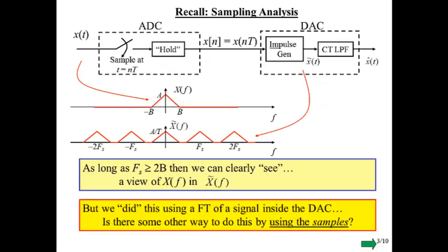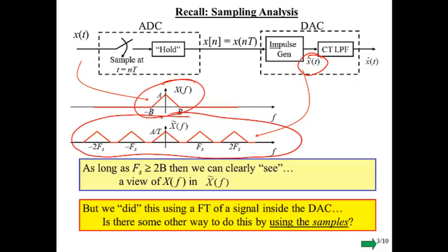So, recall what we were talking about in our sampling analysis. We showed that if we started with a spectrum that looked like this, halfway through the DAC we got something that looked like this with all these spectral replicas. And as long as we sampled fast enough, we could isolate the original signal there.